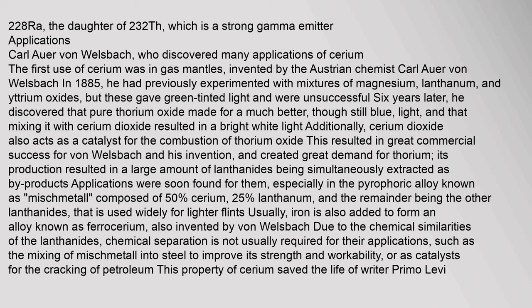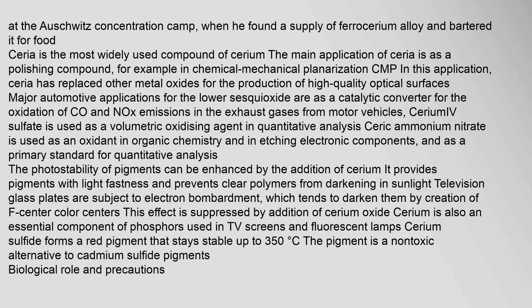The production of thorium resulted in a large amount of lanthanides being simultaneously extracted as by-products. Applications were soon found for them, especially in the pyrophoric alloy known as mischmetall, composed of 50% cerium, 25% lanthanum, and the remainder being other lanthanides, used widely for lighter flints. Iron is also added to form an alloy known as ferrocerium, also invented by von Welsbach. This property of cerium saved the life of writer Primo Levi at the Auschwitz concentration camp, when he found a supply of ferrocerium alloy and bartered it for food.